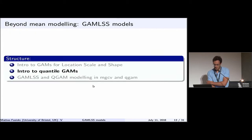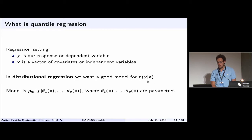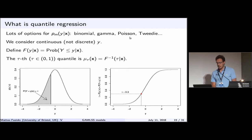That was a brief introduction to GAMLSS models. Now we move to quantile GAMs. We are in a regression setting — the distributional regression case where we hope to find a good model for the probability of Y given X. There are many options for the conditional distribution: binomial, gamma, and the GAMLSS models just described. In quantile regression we typically assume a continuous response variable Y.